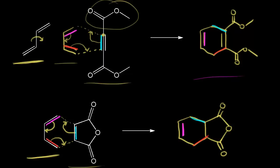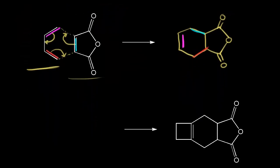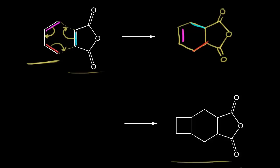What if you were given the product and asked to come up with the necessary diene and dienophile? Let's think backwards. Given the product on the right, think about moving those electrons in reverse. Starting with the magenta electrons moving over to here, then the blue electrons moving over to here, and finally the red electrons moving over to here. Now we can draw our diene and dienophile.